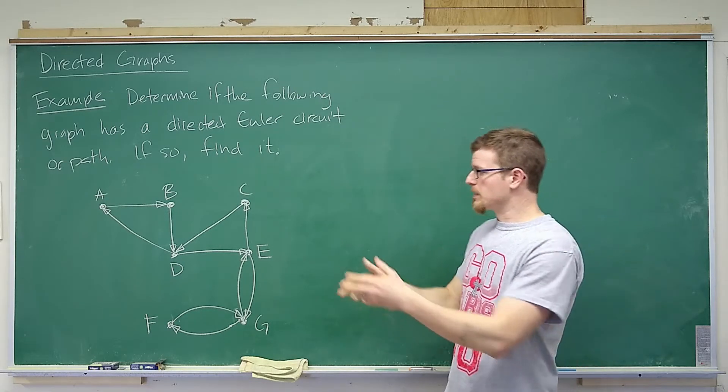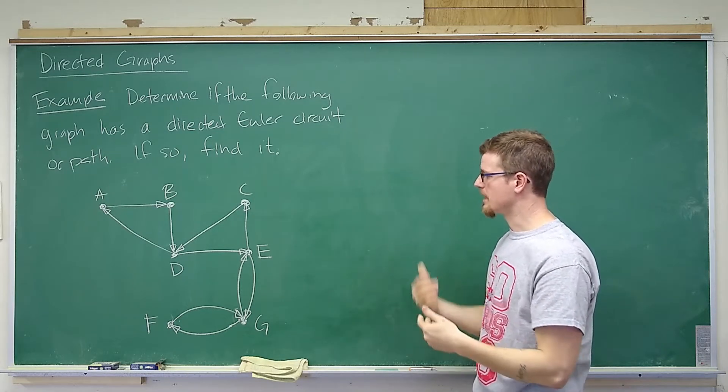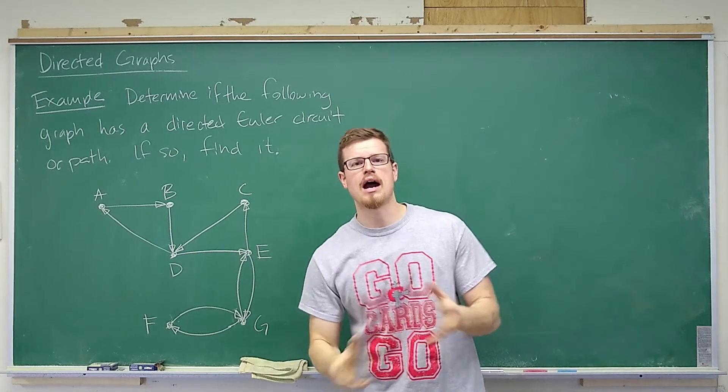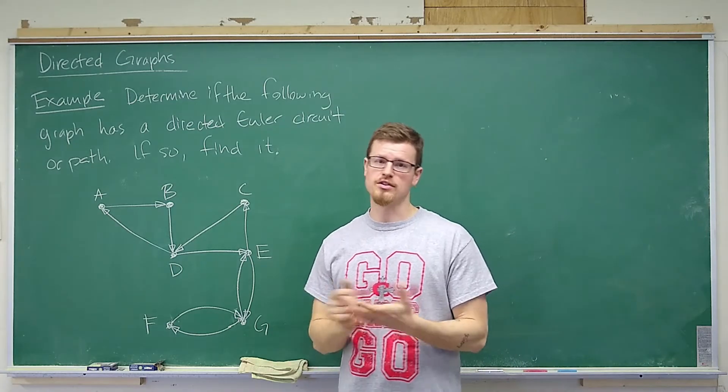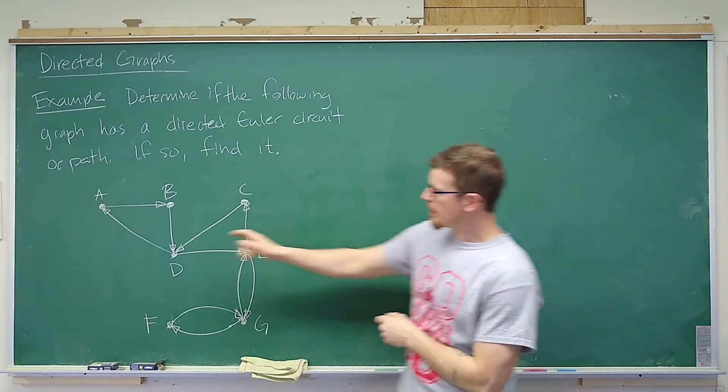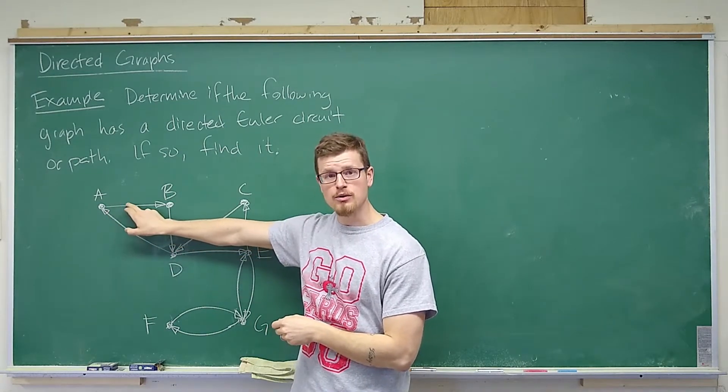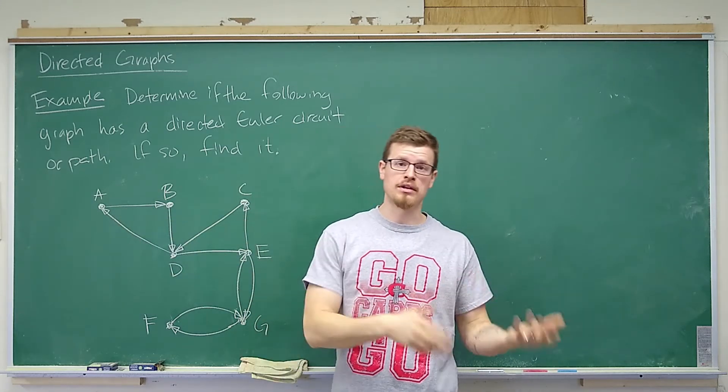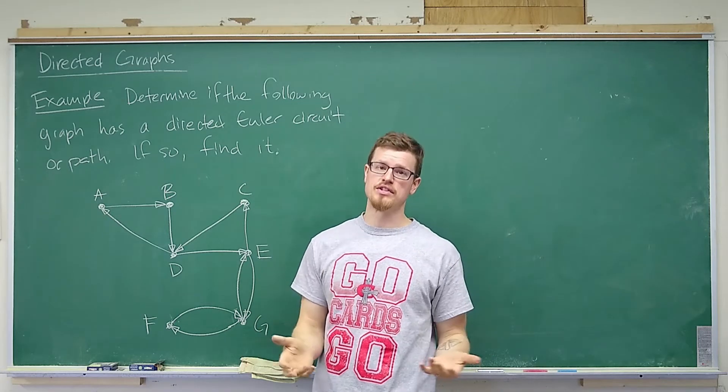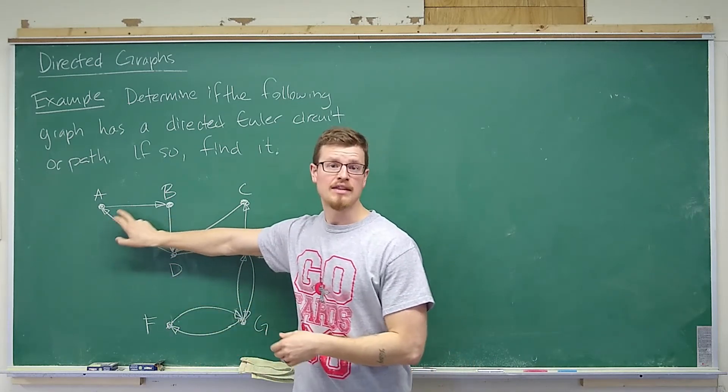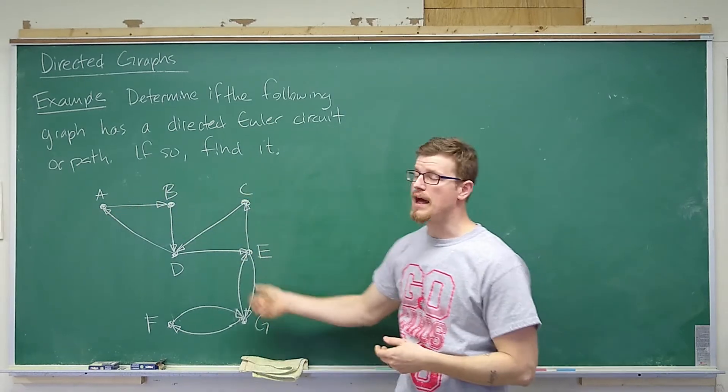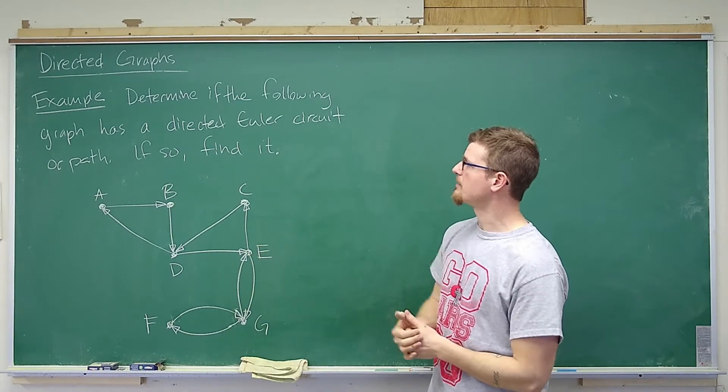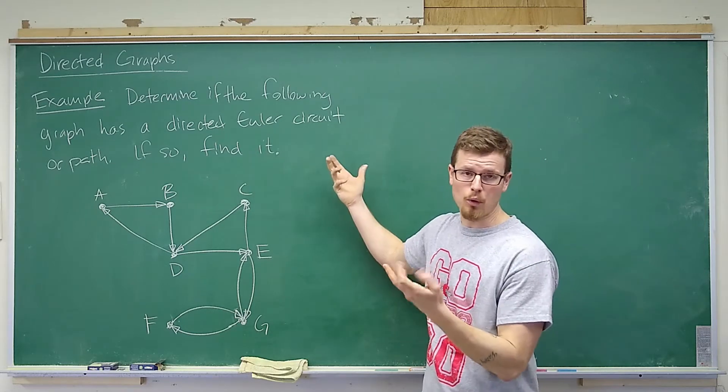Here we have to make sure that we can travel along the edges in the correct direction and get ourselves an Euler circuit or path. So how does the theorem change? Well, if the in-degree matches the out-degree at every vertex, then when the degrees match the in and out degree, it has an even degree. And if that's the case for every single vertex, then we would have a directed Euler circuit.